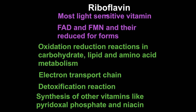Riboflavin participates in oxidation-reduction reactions in carbohydrate, lipid, and amino acid metabolism through FAD and FMNH2. In the electron transport chain, some complexes contain flavoproteins with FMN — such as Complex I — and Complex II requires FAD. This is where riboflavin plays a role in the electron transport chain, thereby helping in the synthesis of ATP, the energy currency of the body.